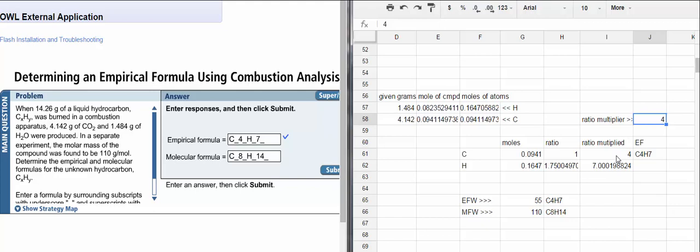I'm multiplying 1 by 4 to get 4, and 1.75 by 4 to get 7. That's what these columns are about. This looks nice because now I have whole numbers. The empirical formula is C4H7, which I type in here.